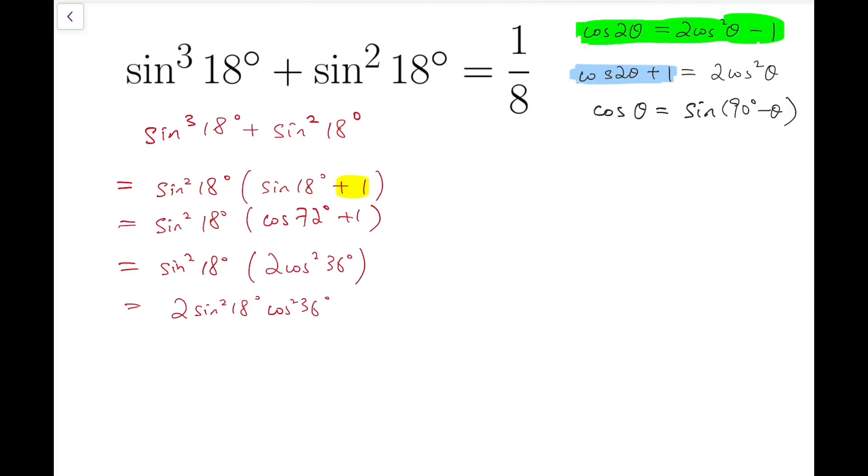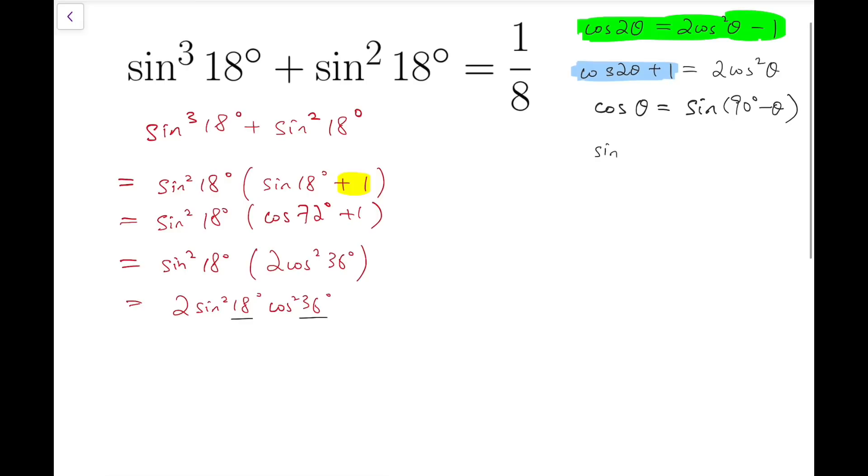To proceed even further, notice that with 18 and 36, which are double angles. So again, some kind of double angle identity might be useful, but now we are at products. Things related to products and double angle identities would be the double angle identity of sine, which says that sine of 2θ in general is equal to 2 times sine times cosine. And that's very close to what we have right now.